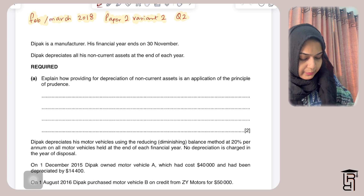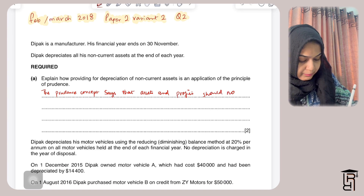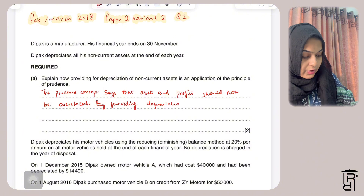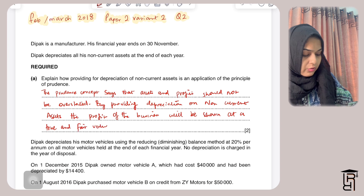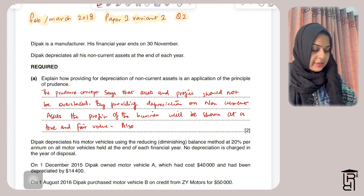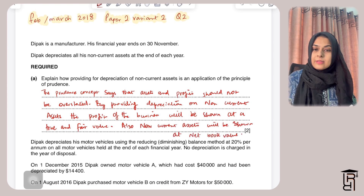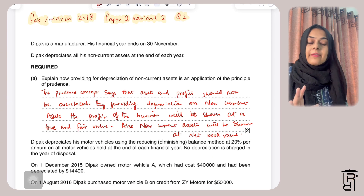The prudence concept says that assets and profits should not be overstated. By providing depreciation on non-current assets, the profit of the business will be shown at a true and fair value. Also, non-current assets will not be overstated — they will be shown at net book value, which is a fair value and does not overstate the asset.